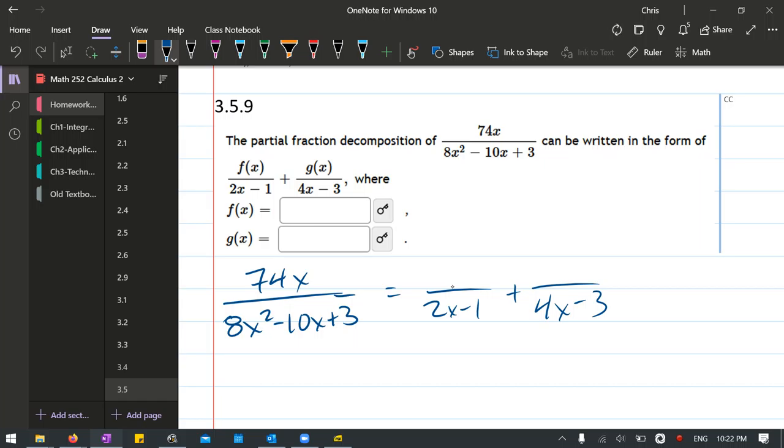Now these are both linear factors, degree 1. So in the numerator we're going to put a degree 0 polynomial which is a constant. If this was squared, meaning degree 2, we'd need a linear or degree 1 in the numerator. It does not, so we don't need that.